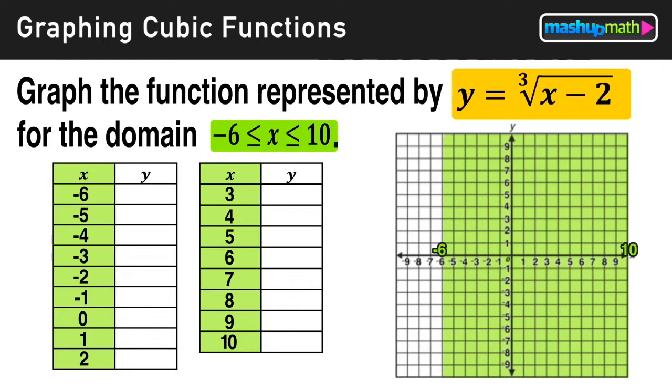For the first x value of negative 6, I want to take that value and replace that with x in the original function, then evaluate. So negative 6 minus 2 equals negative 8, and the cube root of negative 8 equals negative 2. So when x is negative 6, y is negative 2, and we have the first point that is going to be on our graph.